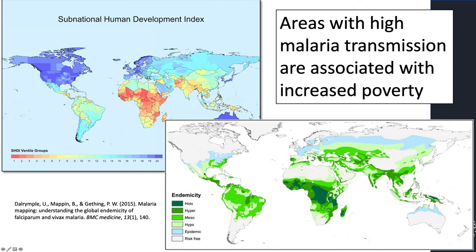The lighter green areas have consistent endemic transmission, and the darkest green areas are where transmission is really intense — right in the tropics. Looking at wealth, the human development index — which measures access to indoor plumbing, electricity, and education — shows that wealth is primarily concentrated in temperate climates like North America, Western Europe, Australia, Japan, and Korea. Poverty is primarily concentrated in the tropics, and one theory called geographic determinism suggests that susceptibility to malaria transmission drives poverty and human development.